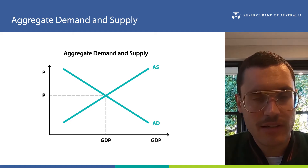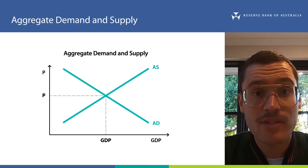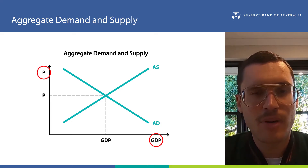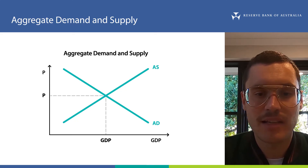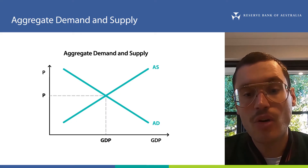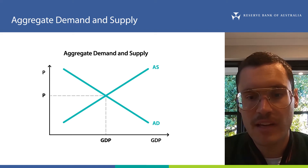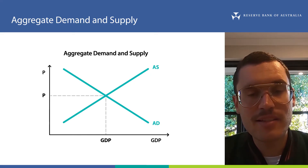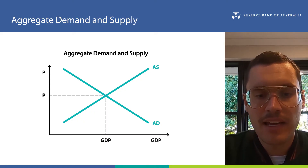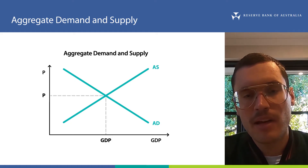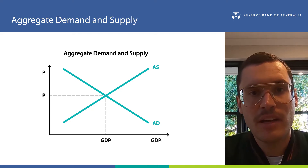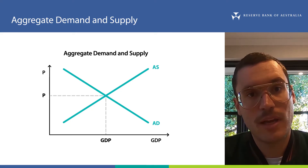Now we have two concepts defined — aggregate demand and aggregate supply. Let's put them together using a diagram. On the x-axis we have GDP and on the y-axis we have prices, which you can think of as the general level of prices in the economy. The aggregate supply curve is the upward sloping line — the total willingness of everyone in the economy to produce goods and services. The aggregate demand curve is the downward sloping line — the total willingness to purchase goods and services. It's downward sloping because you'll be willing to buy more when the price is lower.